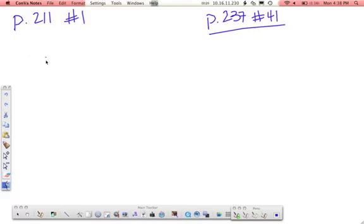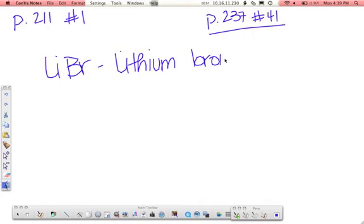So A is LiBr. Remember you just name the metal, so we have lithium. Double check to make sure that it's not one of the elements that needs a Roman numeral. Remember Roman numerals are needed on D-block elements, and also tin and lead. Lithium is an S-block, so it does not need a Roman numeral, so just lithium. And then the second element is named with that IDE prefix, if it's just the element. So lithium bromide. That's A.